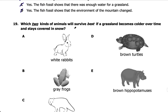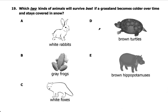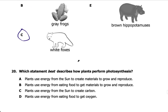Number nineteen: which two kinds of animals will survive best if grasslands become colder and stay covered in snow? The animals offered are white rabbits, frogs, white foxes, brown turtles, and brown hippopotamuses. White rabbits and white foxes will blend in with their snowy environment very well, and they're covered with fur to keep them warm. Turtles, hippos, and frogs don't have a lot of fur, won't blend in, and will have a hard time surviving the very cold weather.